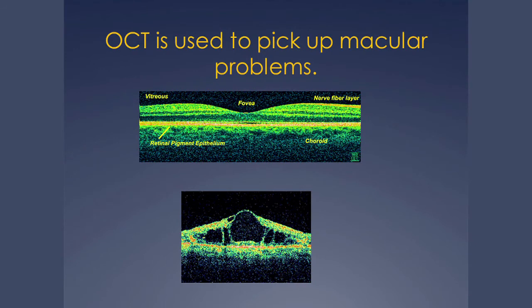A few years ago, all we had was the fluorescein dye test, and people would frequently have injections to monitor their birdshot. Now we have OCT, which has really changed and improved things. We can pick up conditions like cystoid macular edema — shown in the lower part of that picture — which can affect central vision quite badly. The benefit is that we can measure it accurately and see from one visit to the next whether treatment is working.